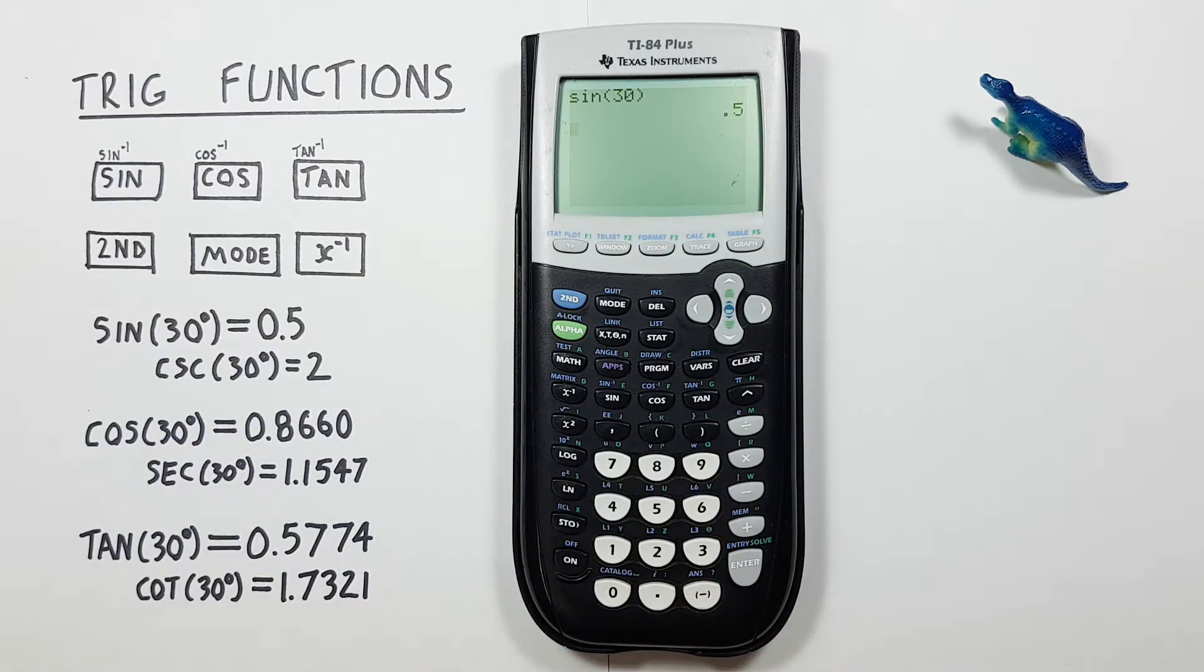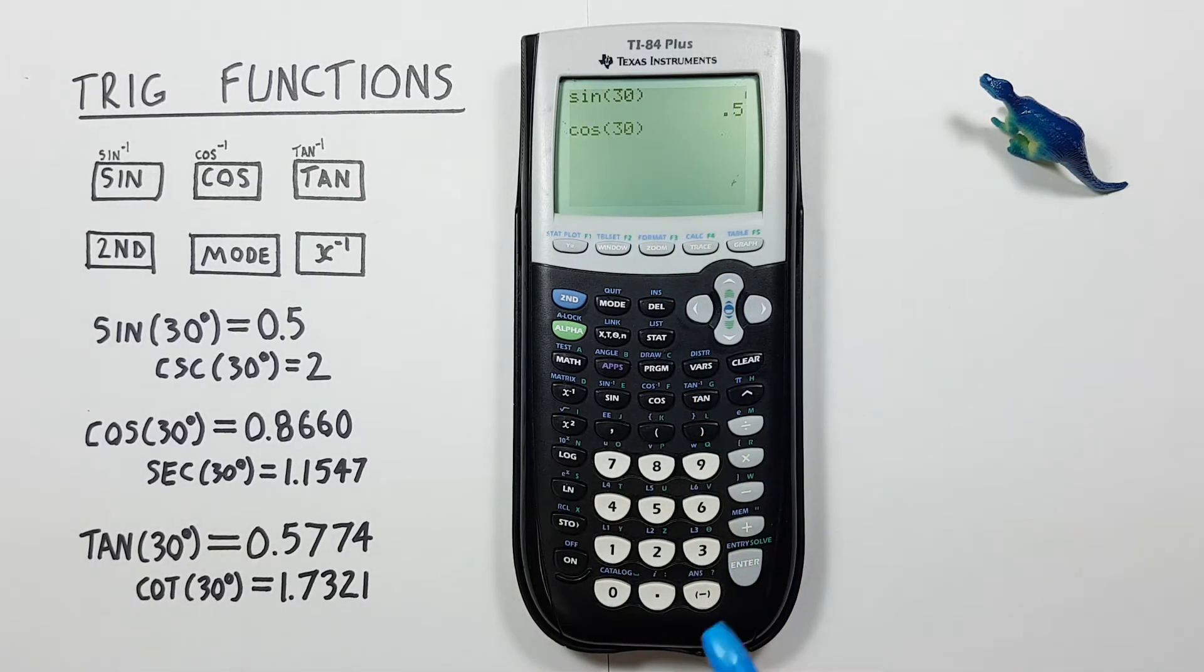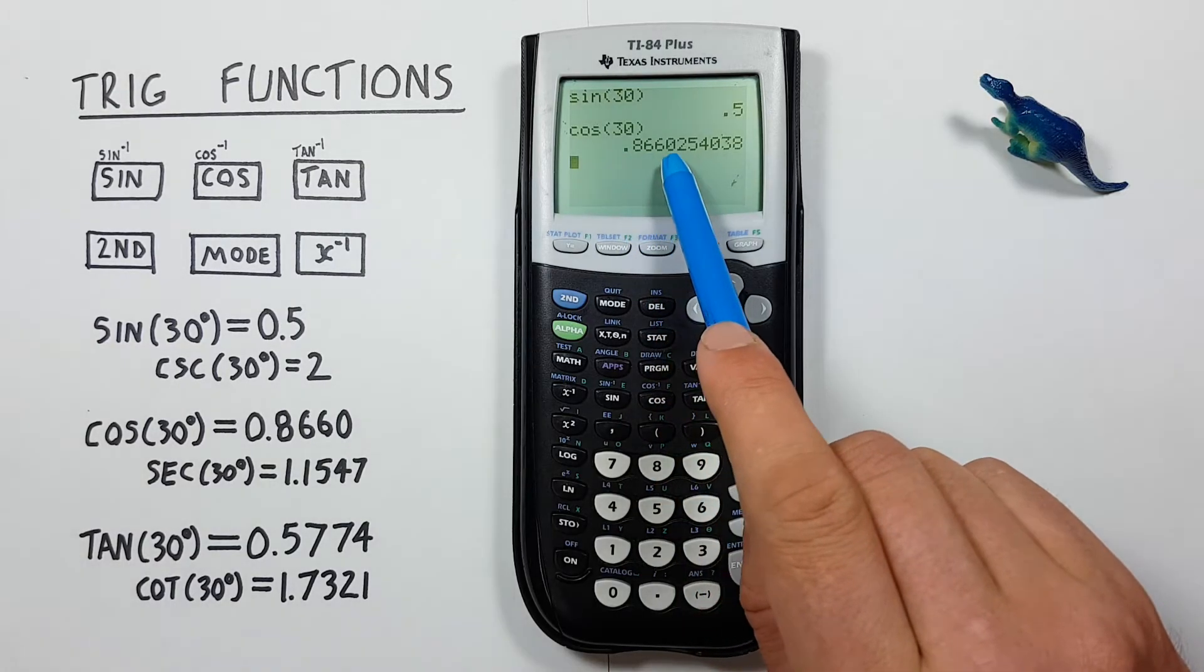You do cosine the same way. Cos, 30, close our bracket, and press enter. This gives us 0.8660, etc.